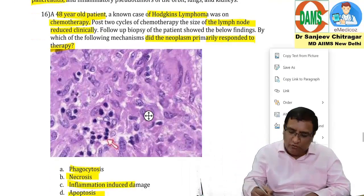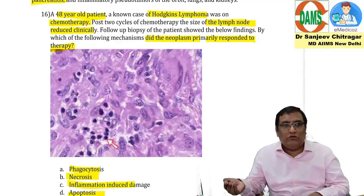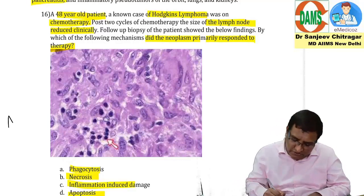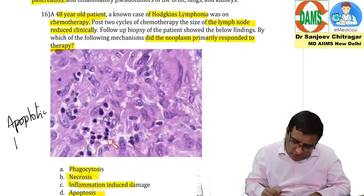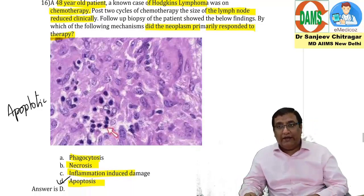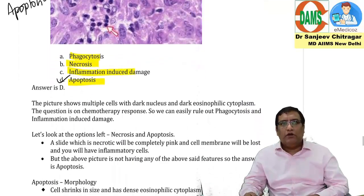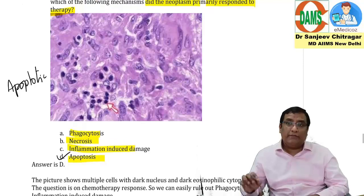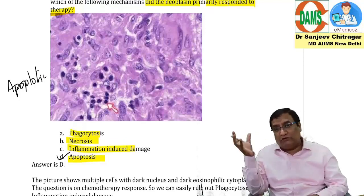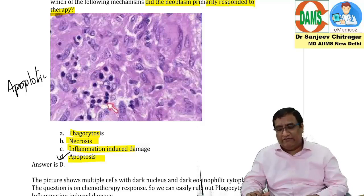The biopsy shows condensed nuclei and increased eosinophilia in the cytoplasm — these are apoptotic cells or apoptotic bodies. So the correct answer is apoptosis. Death by chemotherapy and radiotherapy is primarily by apoptosis, not necrosis. Necrosis can happen in tumors because rapid proliferation reduces blood supply, leading to ischemic necrosis.